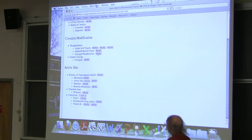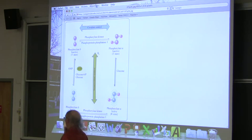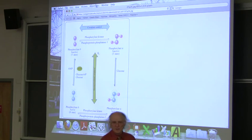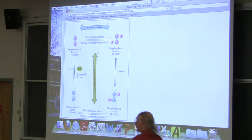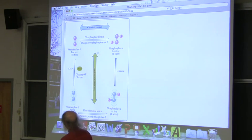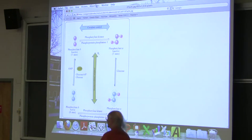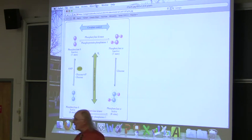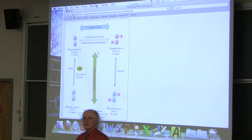Another modification I want to talk about is an enzyme called glycogen phosphorylase. This enzyme is important for breaking down glycogen, which in animals is the primary way we store glucose. It's controlled by having phosphates put onto it — two phosphates, as you can see here.